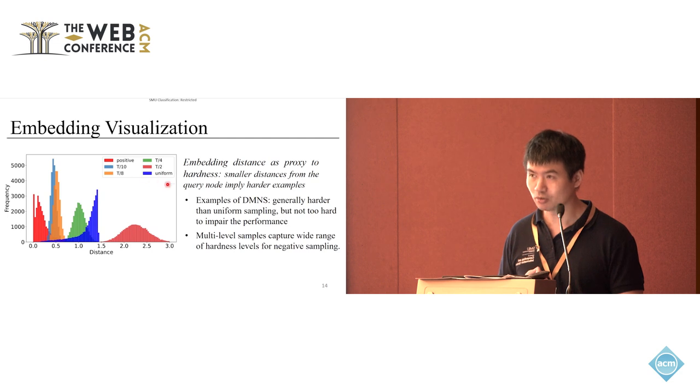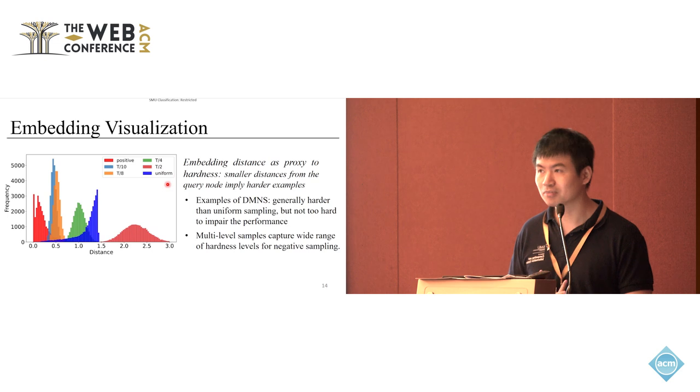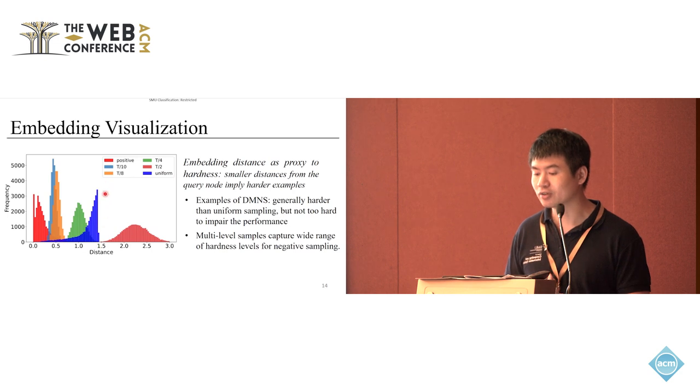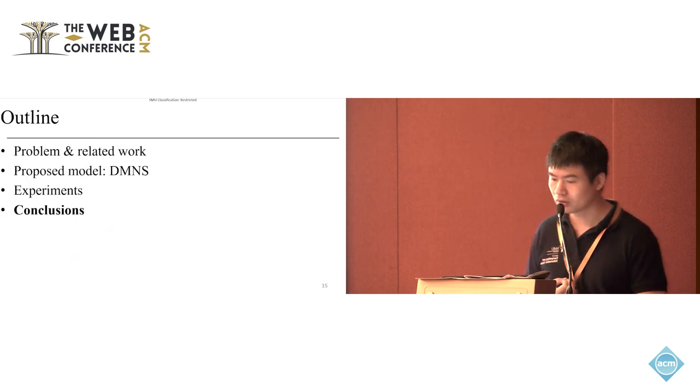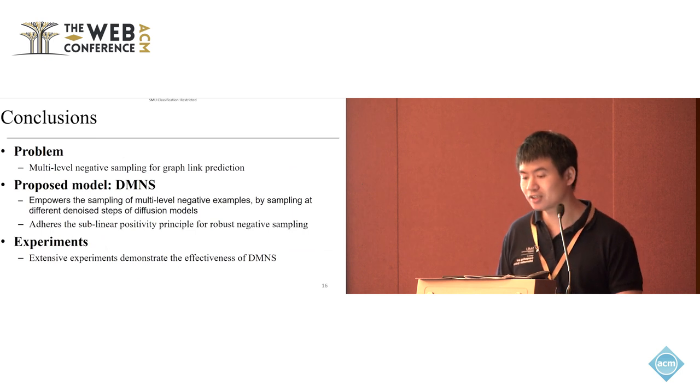In comparison, we also have uniform negative samples, which are randomly selected from the graph. We can see the uniform samples are actually very concentrated in terms of the distance to the query node. So if we only use random uniform samples, then the choice of the difficulty level is very limited.